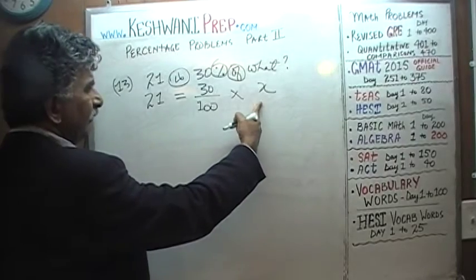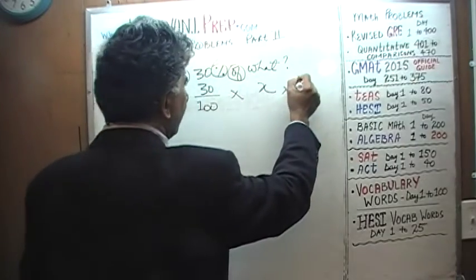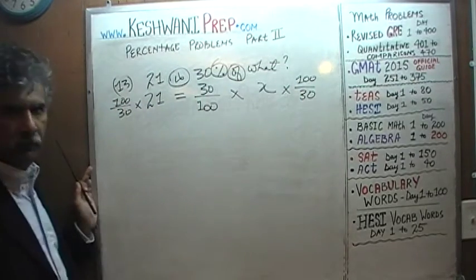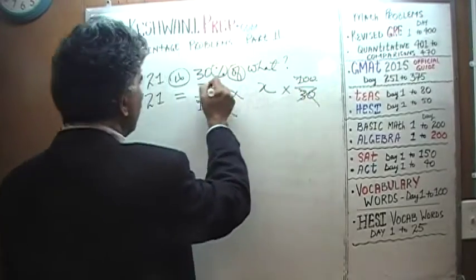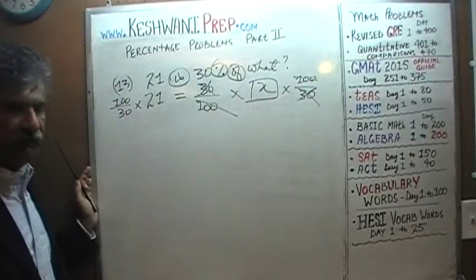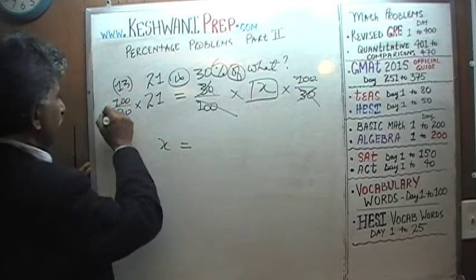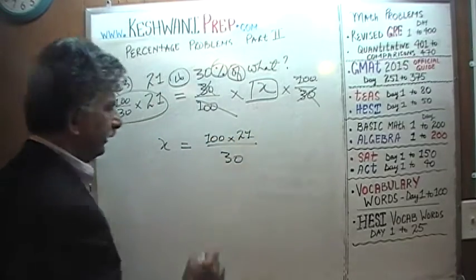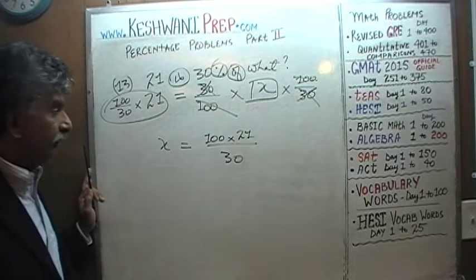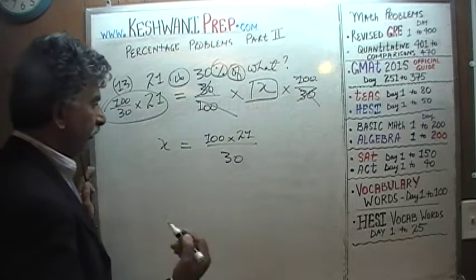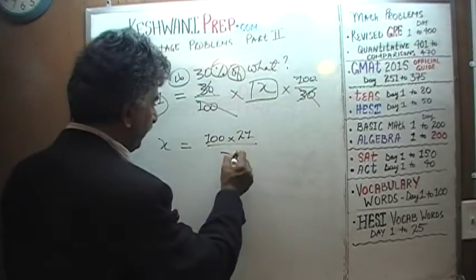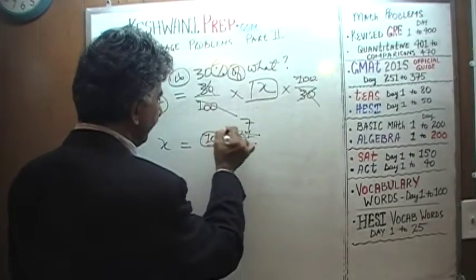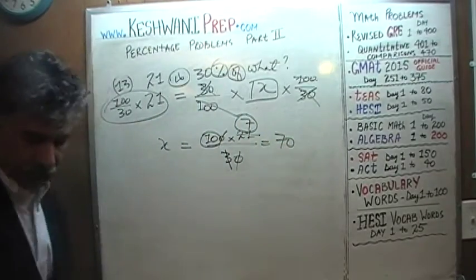We want x by itself, so multiply both sides by 100 over 30. The 100s cancel and the 30s cancel, leaving x equals 100 times 21 over 30. Divide top and bottom by 10, then by 3: 3 goes away and 21 becomes 7. We end up with 10 times 7, which is 70.